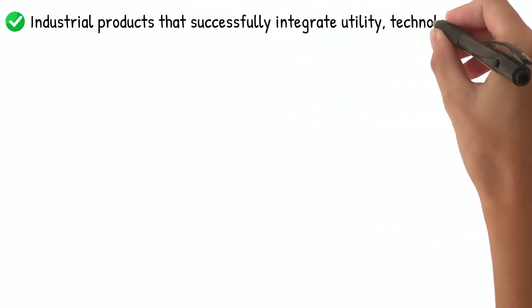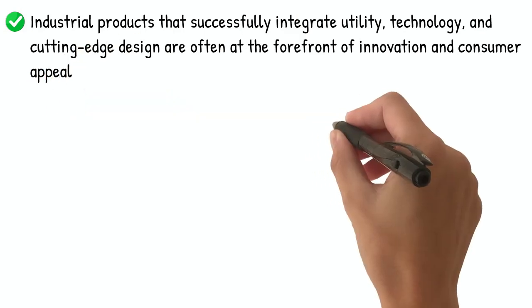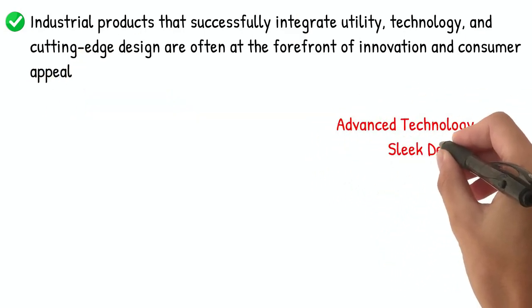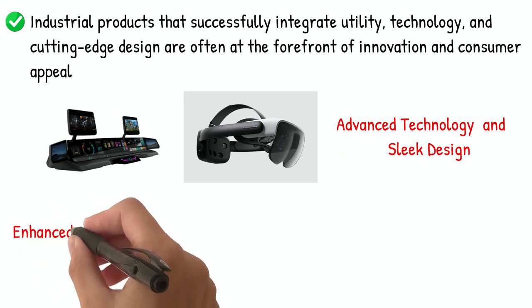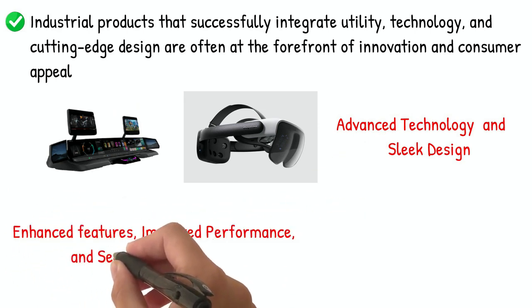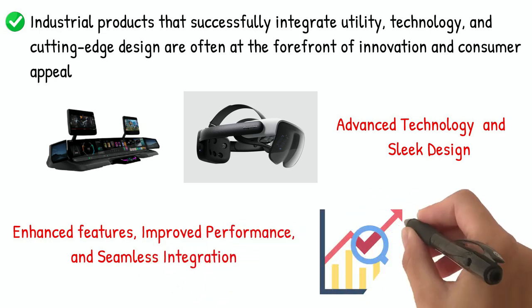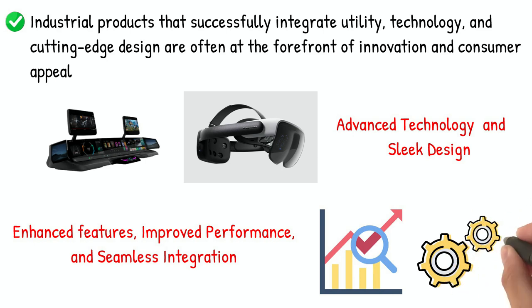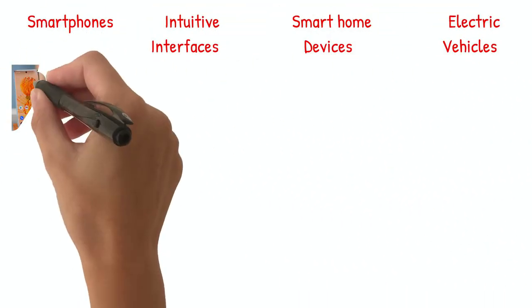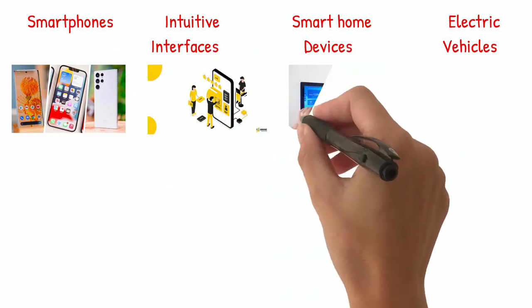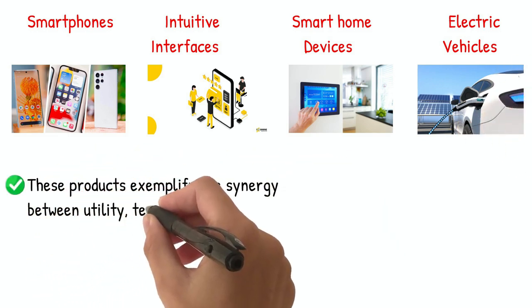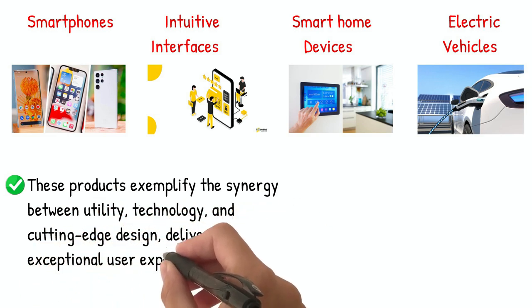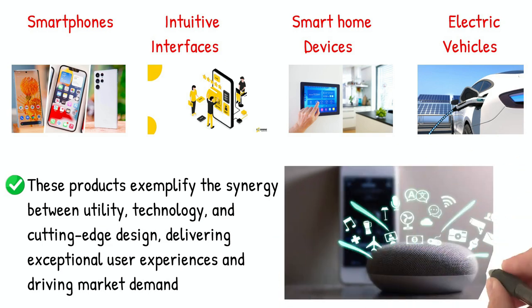Industrial products that successfully integrate utility, technology, and cutting-edge design are often at the forefront of innovation and consumer appeal. These products go beyond meeting basic functional needs by incorporating advanced technology and sleek design elements that enhance usability and aesthetic appeal. They demonstrate a deep understanding of user requirements and leverage technological advancements to provide enhanced features, improved performance, and seamless integration with modern lifestyles. Whether it's smartphones with advanced processors and intuitive interfaces, smart home devices that seamlessly connect and automate various functions, or electric vehicles that combine sustainable technology with sleek design, these products exemplify the synergy between utility, technology, and cutting-edge design, delivering exceptional user experiences and driving market demand.